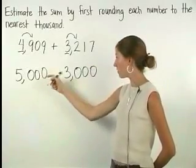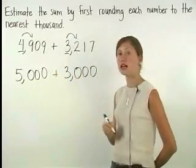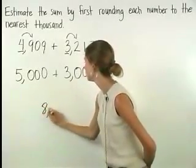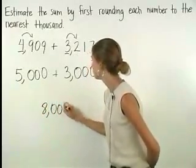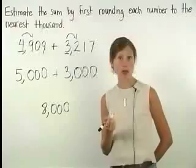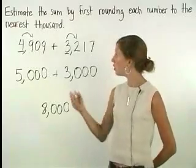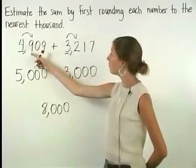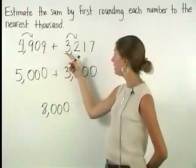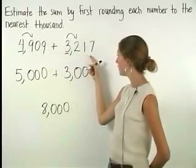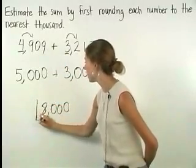So we have 5,000 plus 3,000, which is 8,000. So by rounding each number to the nearest thousand, we can estimate that the sum of 4,909 and 3,217 is close to 8,000.